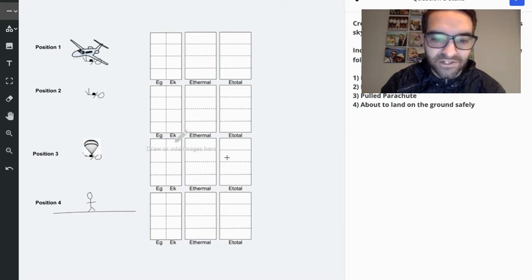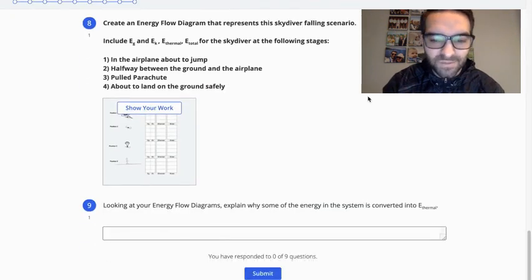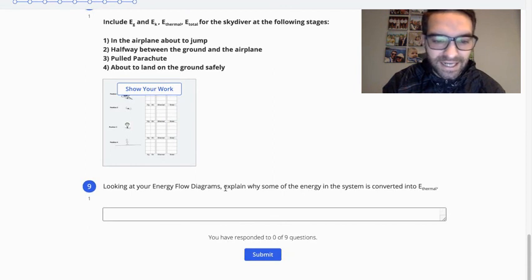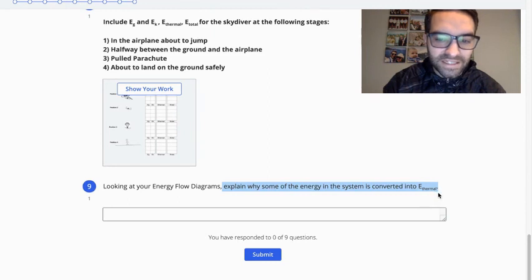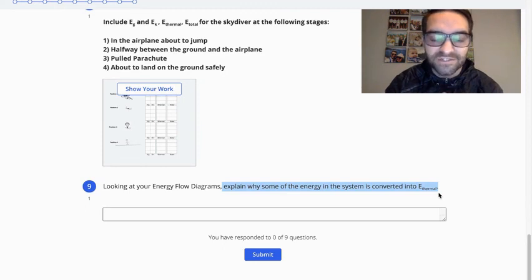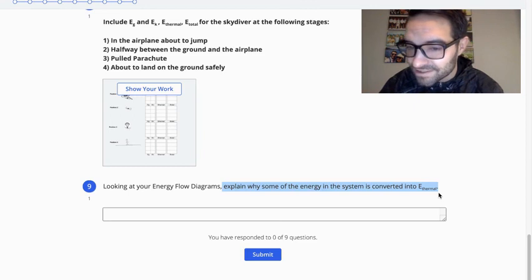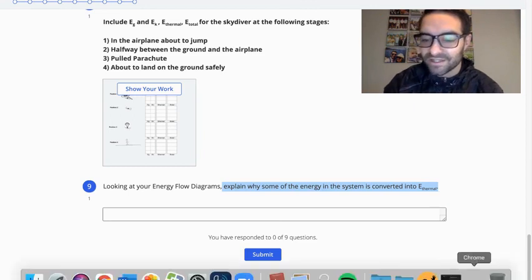But I really want to see how you do before. So give it a try. And then last but not least, I kind of mentioned it. Can you explain to me where that thermal energy came from? So explain why some of the energy in the system is converted into thermal energy. So that's a little bit of a challenge question, but let me know if you have any questions. I look forward to seeing you in class.